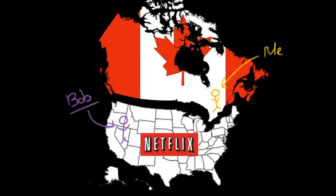Once Bob configures his machine in a very specific way, instead of me calling Netflix's servers directly, what we can do is forward my traffic directly to Bob, and then Bob, due to the configuration on his machine, is going to automatically forward that traffic to Netflix. So I am the originator of the traffic, and Bob is the willing participant acting as an abstraction layer. From Netflix's perspective, the traffic looks like it's coming from Bob, but it's really coming from me in Canada. Netflix has no idea — from their perspective, all the traffic is coming from Bob — and therefore Netflix returns the responses and forwards all that information back to me in Canada.